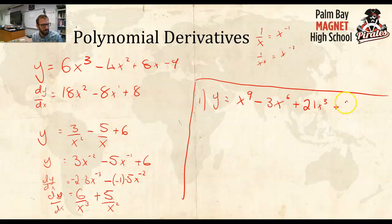number 2, y is equal to x squared minus 3 over x squared plus x. And number 3,